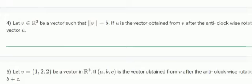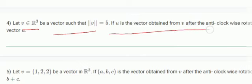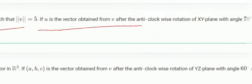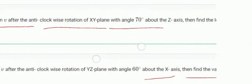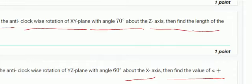Here's question number four: Let v belong to R³ be a vector such that the magnitude of v equals 5. If u is the vector obtained from v after the anti-clockwise rotation in the xy-plane with angle 70 degrees about the z-axis, then we have to find the length of vector u.